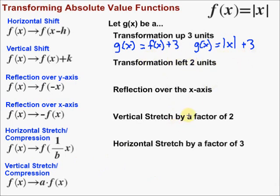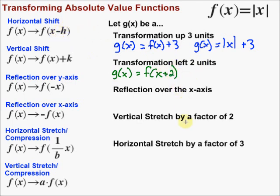This next one: we have a transformation left two units. A left movement is a horizontal shift, so here's our recipe for that — it's f(x minus h). h is the horizontal shift, and if we're going to the left, it takes a negative number to move left. So h is negative two, meaning x minus negative two, which makes this x plus two.